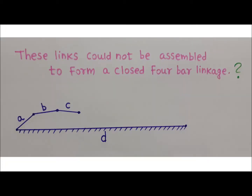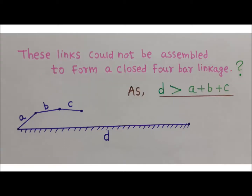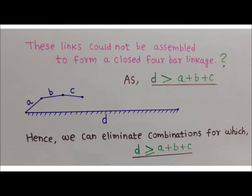On screen there are four links of length A, B, C, and D. The length of the fixed link is D. We cannot assemble these links to form a closed four-bar linkage if D is greater than the summation of the lengths of the other three links — that is, if D > A + B + C — because we cannot have a joint between links of length C and D. Therefore, we eliminate combinations where the length of one link is greater than or equal to the sum of the other three.